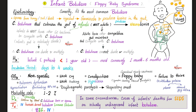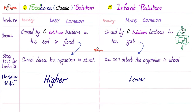Infant botulism: spores are ingested from honey, soil, or dust, then enter the gut and proliferate — especially in infants, because they have no competition from other gut bacteria, unlike adults. Symptoms center around floppy baby syndrome. Diagnosis is clinical; confirm by finding the toxin or spore in the stool of the infant. Treatment is not equine but human-derived botulism immune globulin to neutralize the toxin. You can detect the organism in infant stool because there is almost no competition — the guts of infants are relatively sterile.